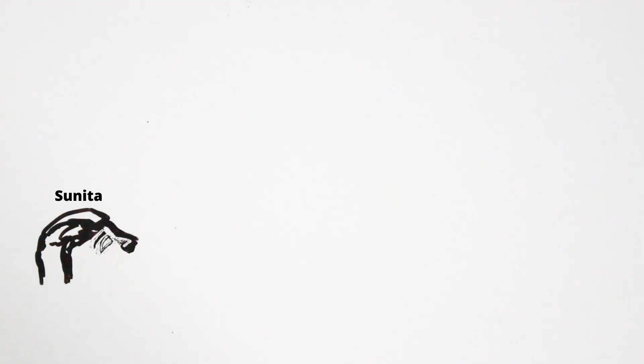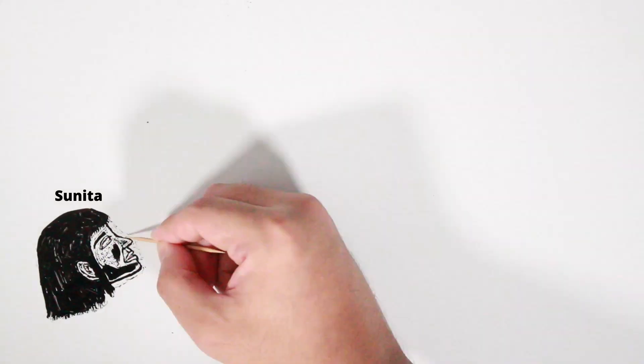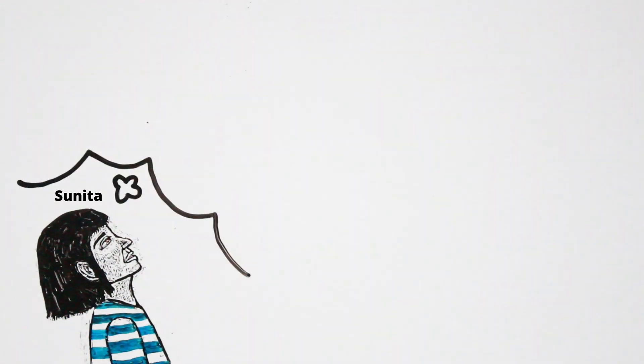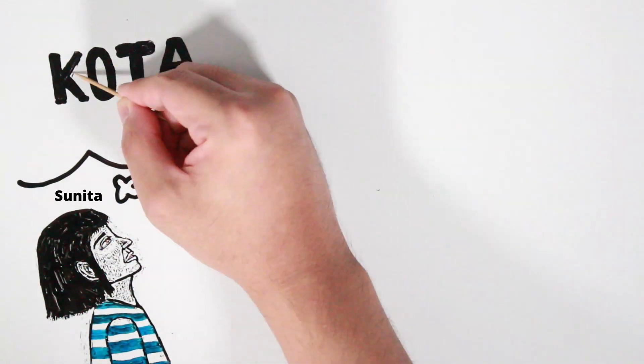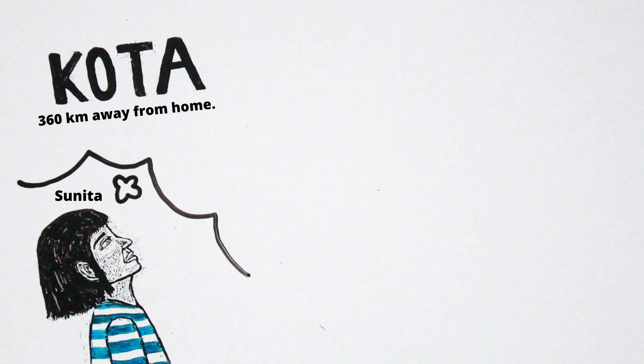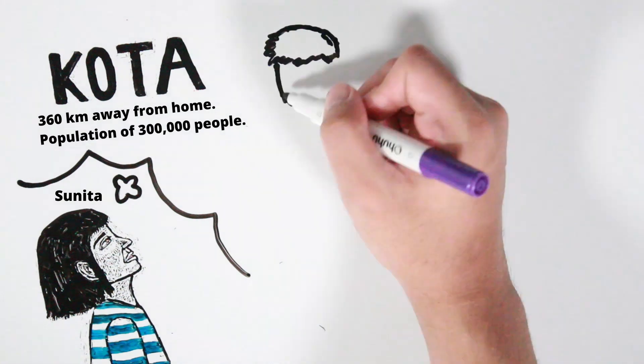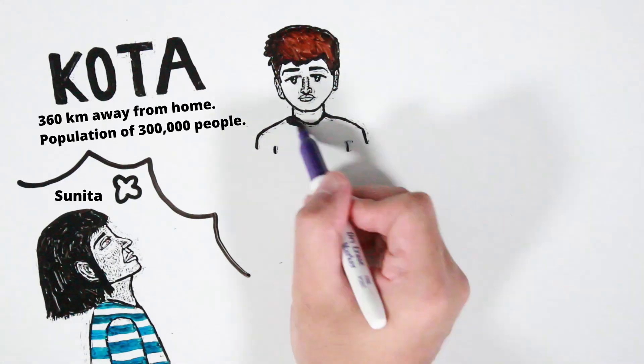When Sunita was two years old, she began talking about her past life. She said she was from the town of Kota, which is about 360 kilometers away from where Sunita lived. Kota had a population of about 300,000 people at the time.